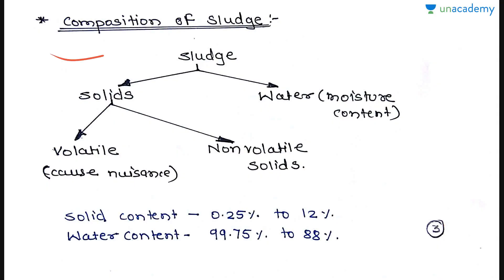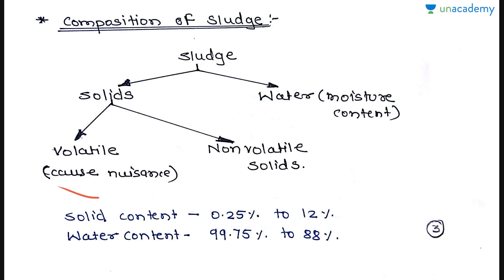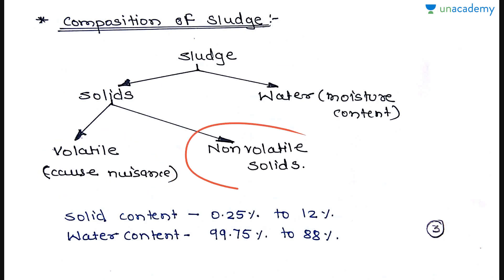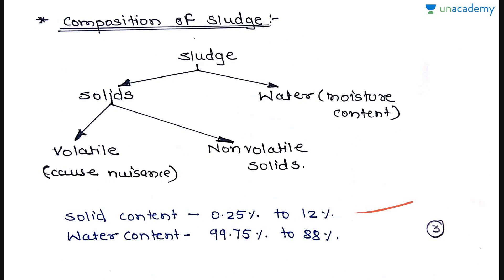Looking at the composition of sludge: sludge is a semi-solid slurry that contains solids and water, where the water is referred to as moisture content and expressed in percentage. Solids are of two types — volatile and non-volatile. Volatile solids generally cause nuisance. In sludge, the solid content is typically from 0.25% to 12%, and water content is from 88% to 99.75%.